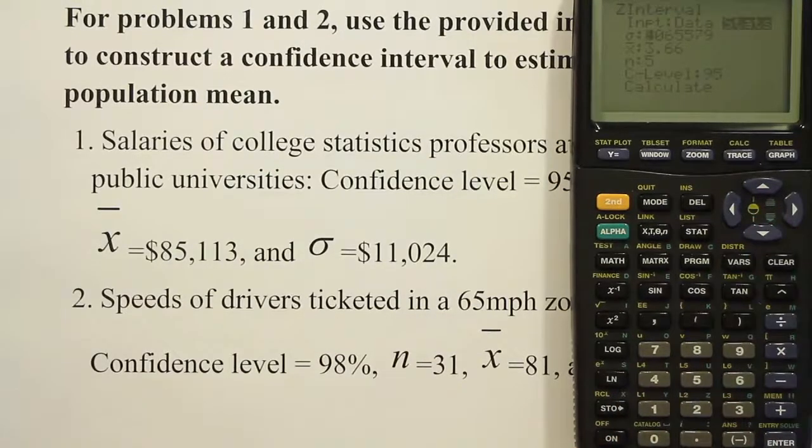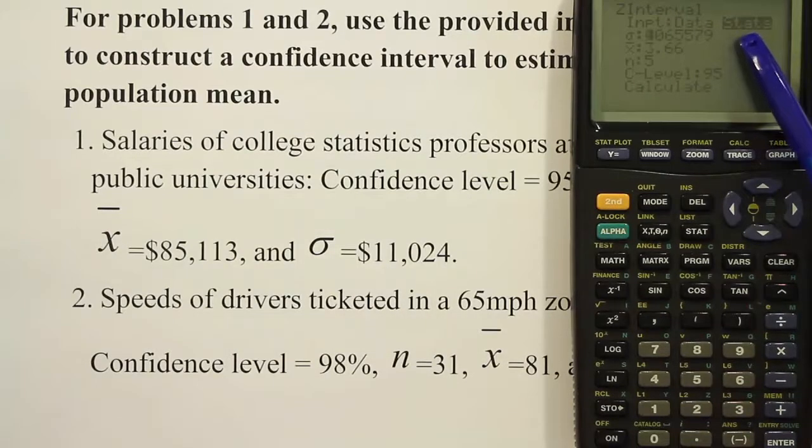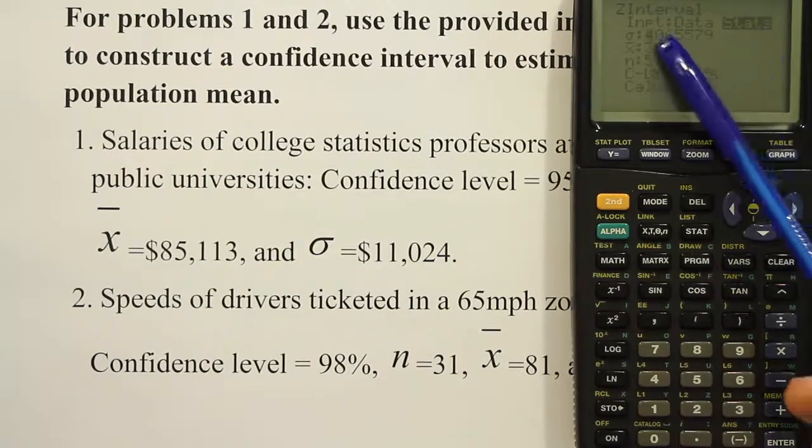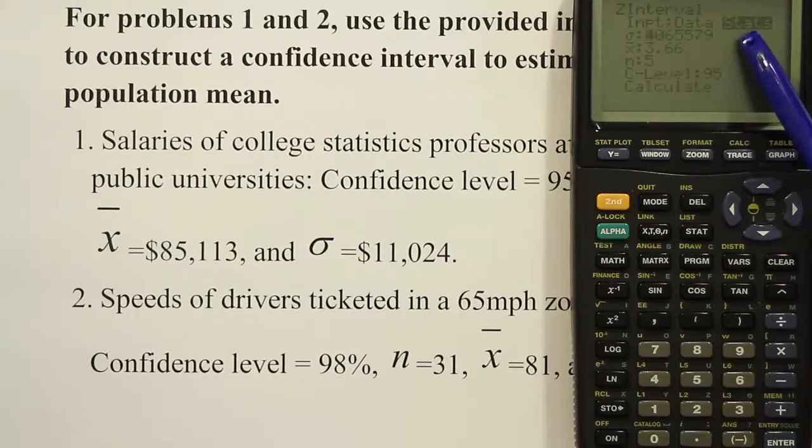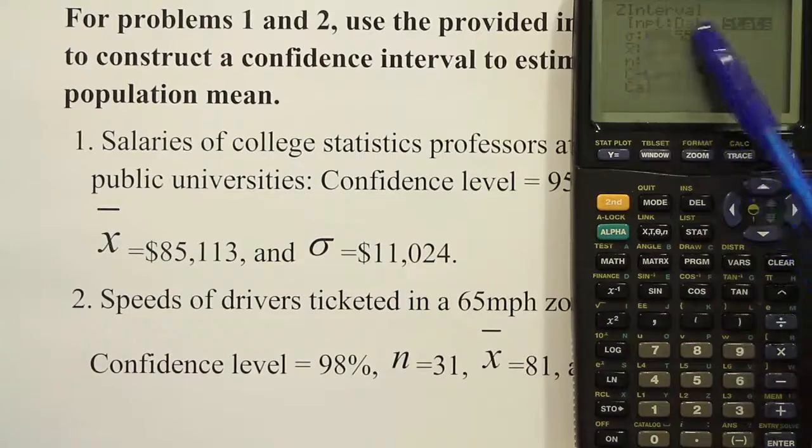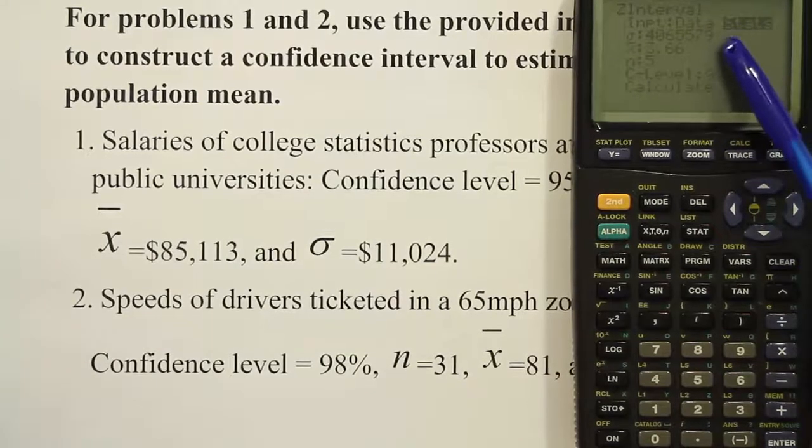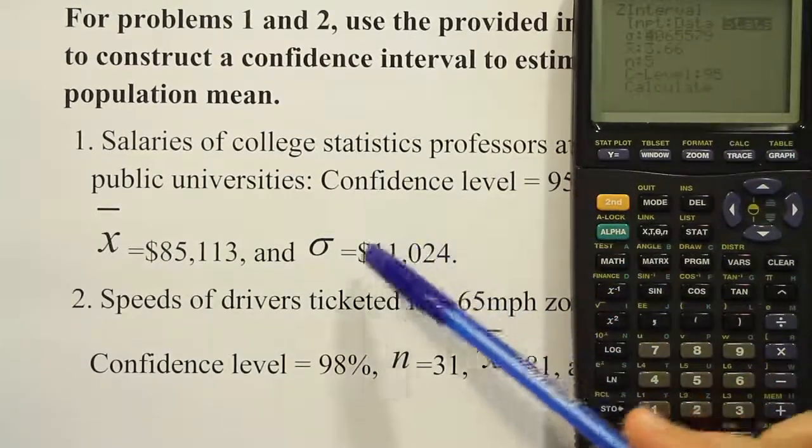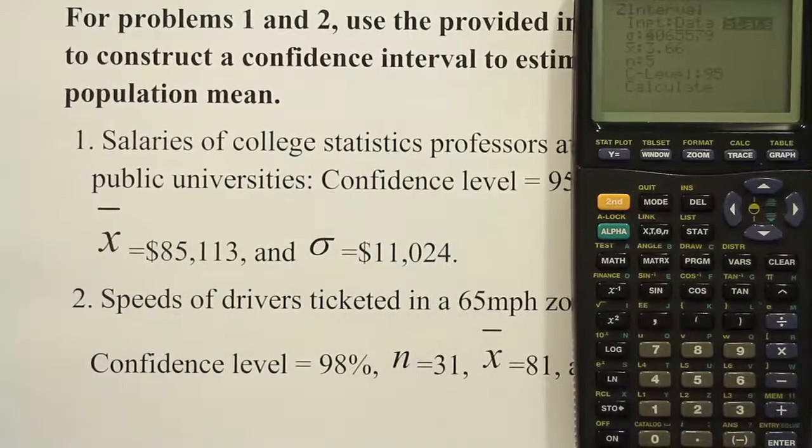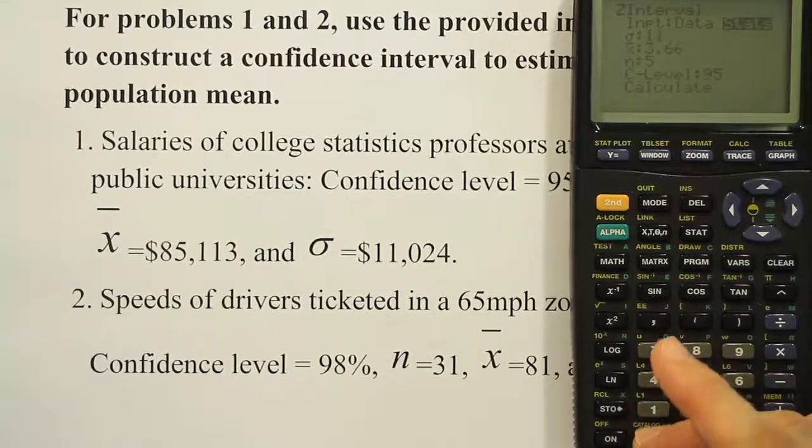Then we're going to push down to where it wants the standard deviation. The calculator is pretty smart. It knows that if you're doing the z interval, you should be using sigma here instead of s. Of course, again, if your teacher is not doing the most formal approach, then you can use s here as long as your sample size is large. But in our case, the calculator asks for sigma, so we're going to enter sigma. So we're going to enter the 11,024.